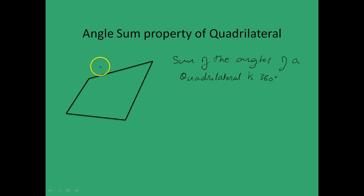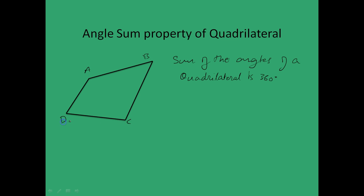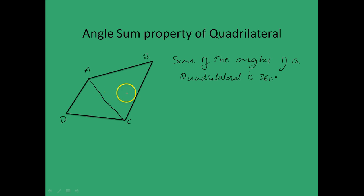Let's see how we can prove that. We'll start by naming this arbitrary quadrilateral as ABCD. One way to do that would be to join AC and make the AC diagonal. Now we have two triangles, and we'll use the property of these two triangles to prove that the sum of the angles of a quadrilateral is 360 degrees.